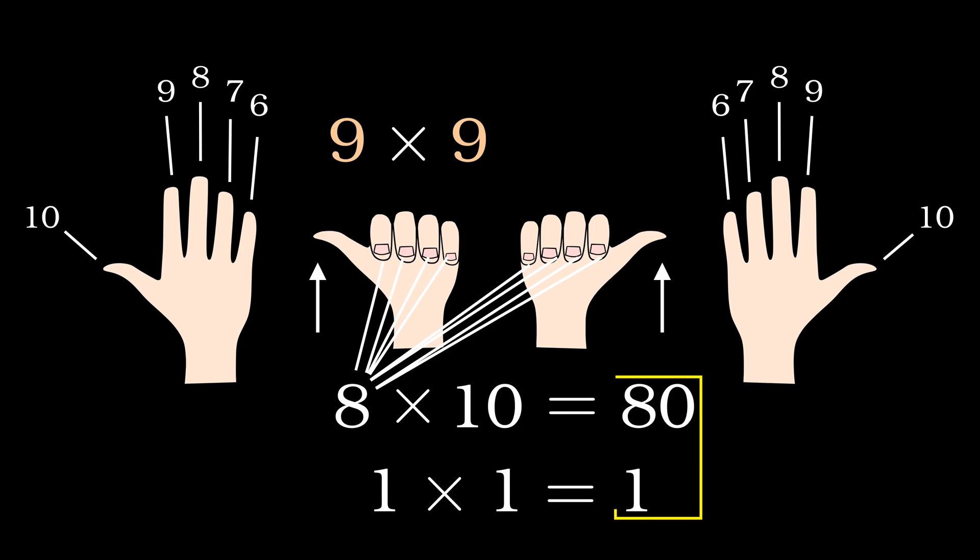By adding these two numbers, we get the result, so 9 times 9 equals 81.